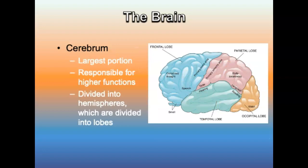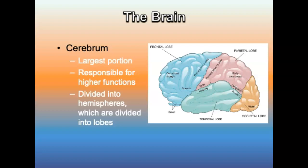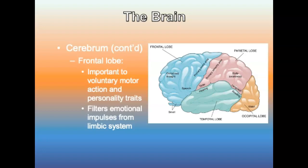The cerebrum is the largest portion of the brain, responsible for higher functions such as reasoning, and is divided into the right and left hemispheres. The cerebral cortex regulates voluntary skeletal movement and level of awareness; injury may result in paresthesia, weakness, and paralysis of the extremities. The frontal lobe is important to voluntary motor action and personality traits. Injury could result in seizures or flat affect, and it filters raw emotional impulses from the limbic system. An injury to the frontal lobe may result in a personality change.